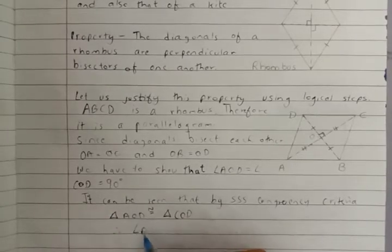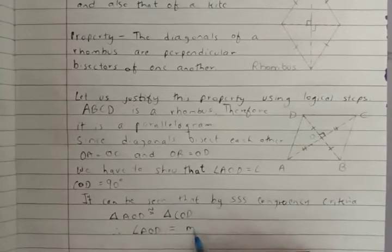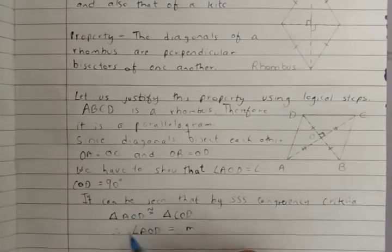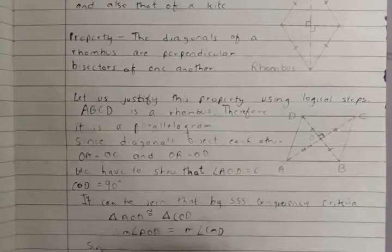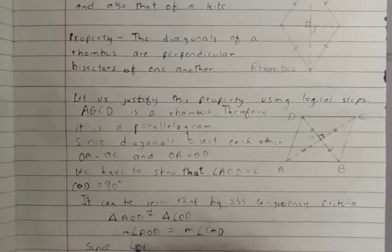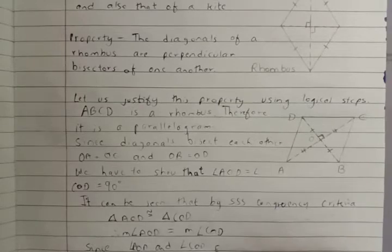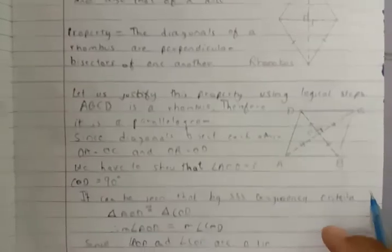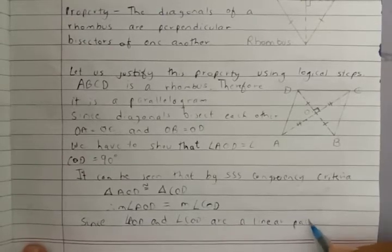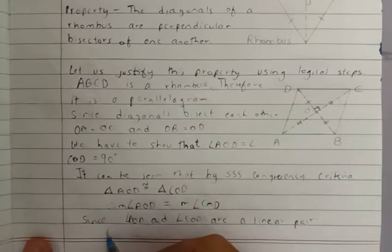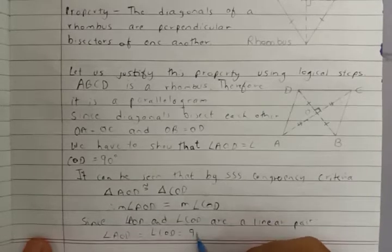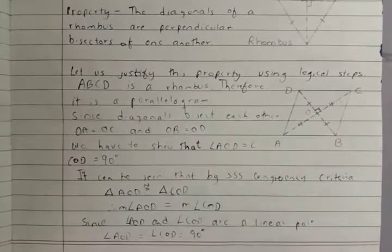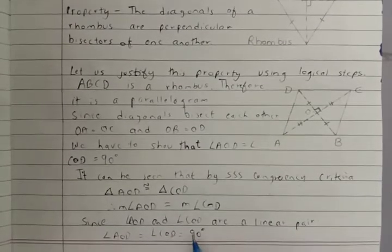Therefore, angle AOD is equal to angle COD. Since angle AOD and angle COD are a linear pair, therefore angle AOD equals angle COD equals 90 degrees. It is now proved that angle AOD and angle COD are each equal to 90 degrees.